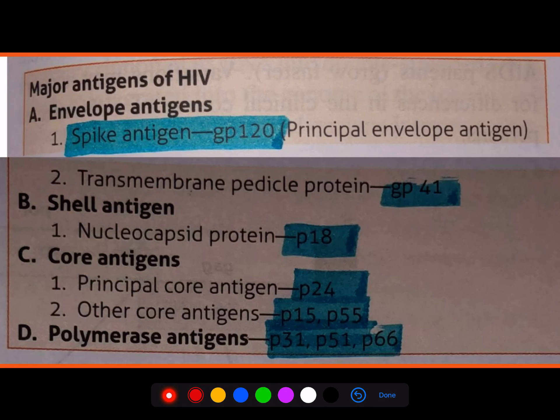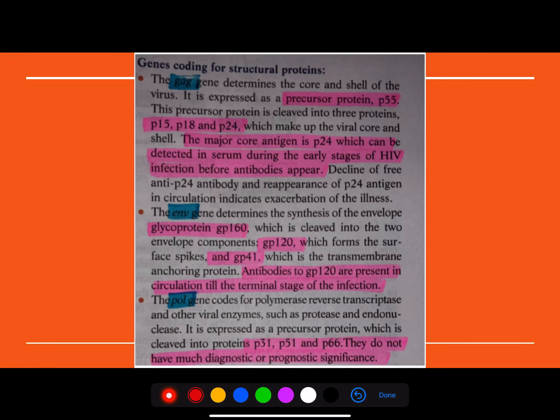So this is what the nomenclature, that is, envelope proteins they contain spikes, that is gp120 or the transmembrane pedicle protein, that is gp41. Your shell protein contains what? Your core proteins inside contains what? Your polymerase antigens contains what?